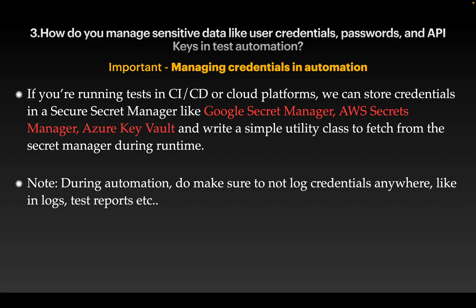If you are running tests in CI/CD or cloud platforms, make sure you are using a secure secret manager like AWS Secret Manager, Azure Key Vault, or Google Secret Manager. These tools help avoid committing passwords to your Git repository. Simply use these tools and write a utility class to retrieve the data during runtime.